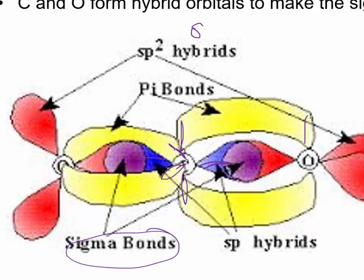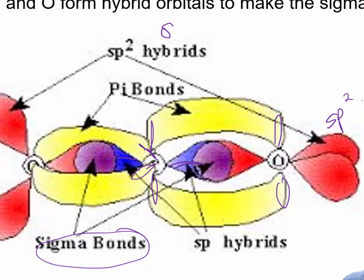And oxygen will just have one pi, one p orbital forming the pi. And this one, oxygen will have three sp2s.